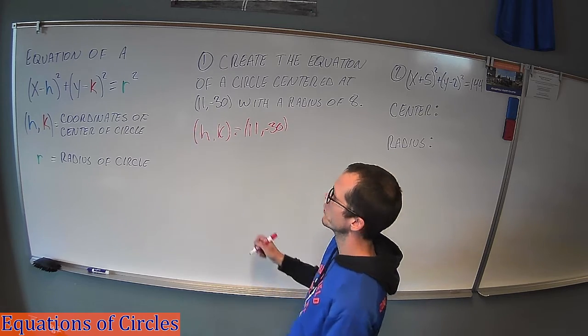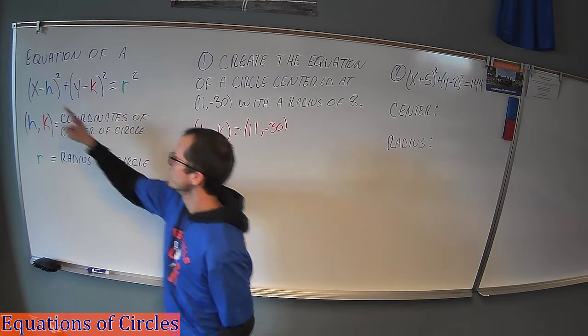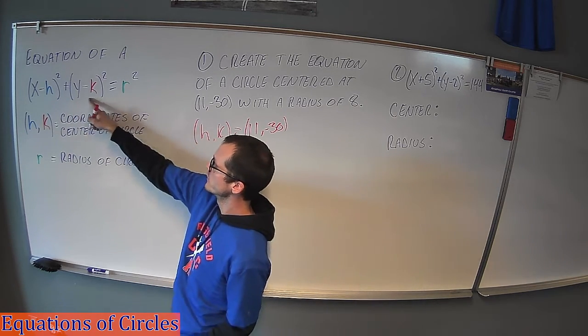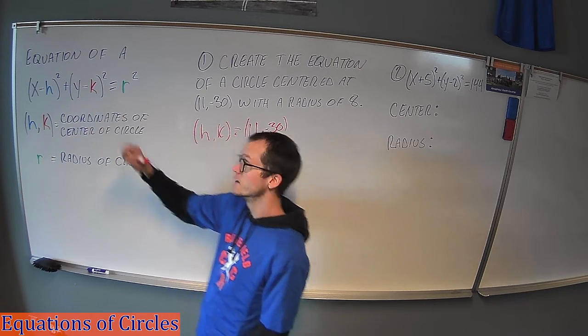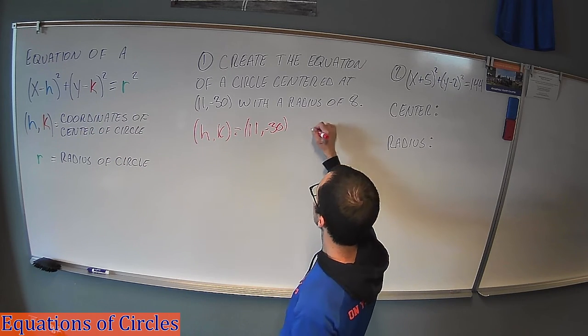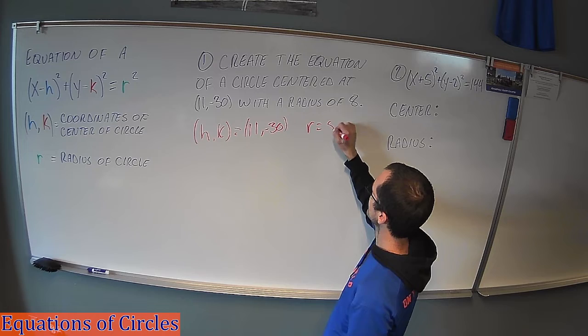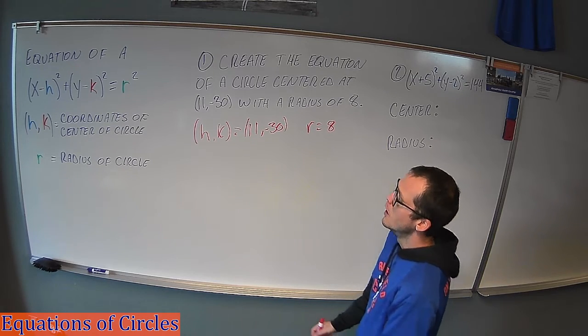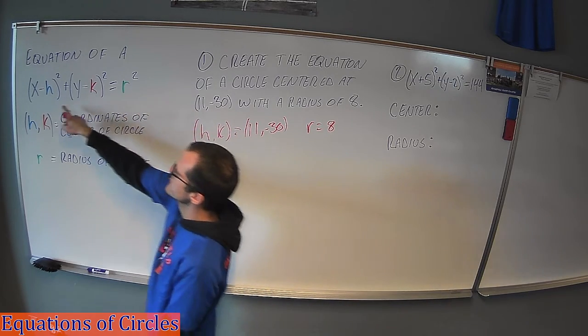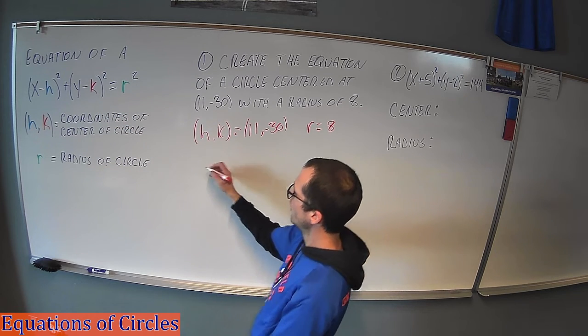So when we plug things into the general form, the h is going to be 11 and the k is going to be -30. So notice that'll turn into a plus sign here shortly. And the r, the radius, is 8. Nice and easy. Okay, we're going to take this form. We're going to replace the h with our h, the k with our k and the r with our r.